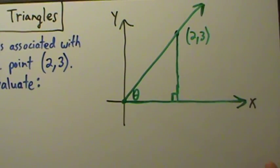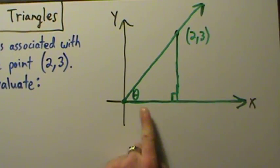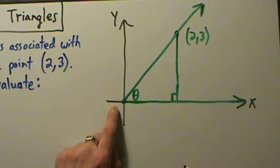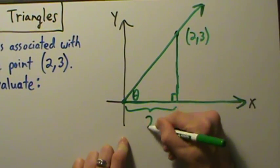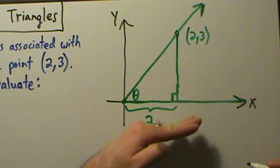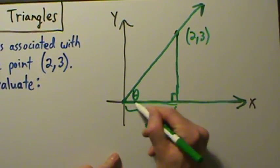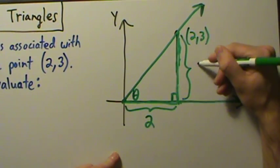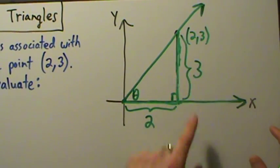Since the point is (2, 3) and the origin is (0, 0), we have to go over 2 and up 3 to reach this point. So the length of the horizontal side is 2, and the length of the vertical side is 3.